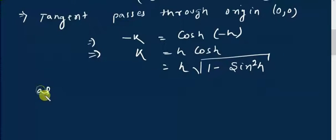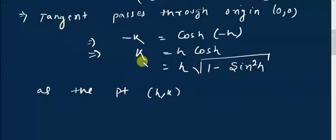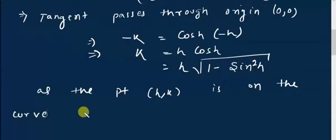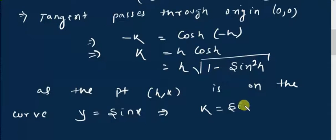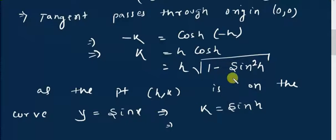Now, as the point (h, k) is on the curve y = sin x, this point must satisfy the equation. So we can write k = sin h. We now have the value of sin h in terms of k, which we can substitute into our equation.